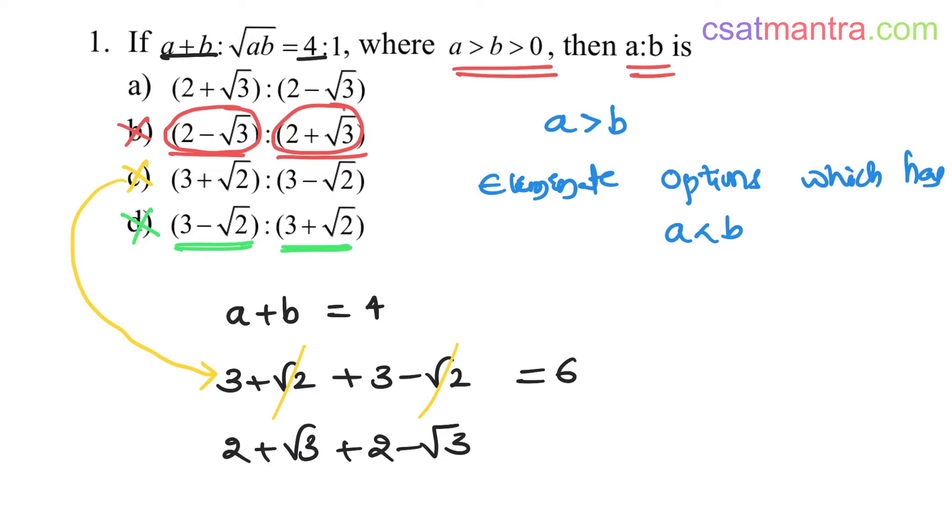Now 2 plus root 3 plus 2 minus root 3, that is 4, right? So A is your answer.